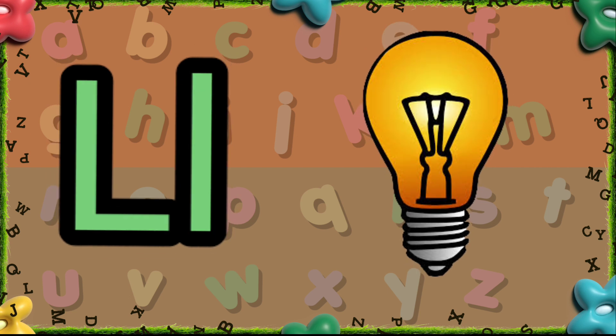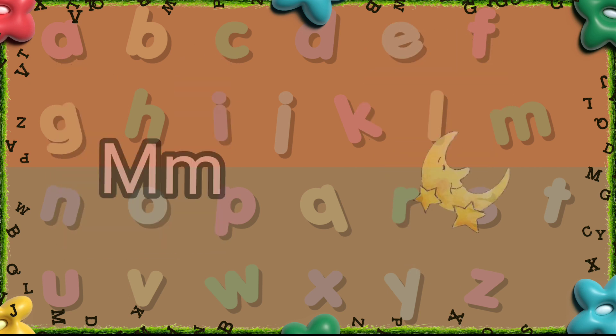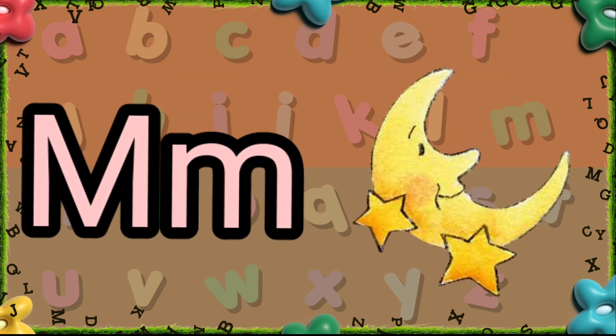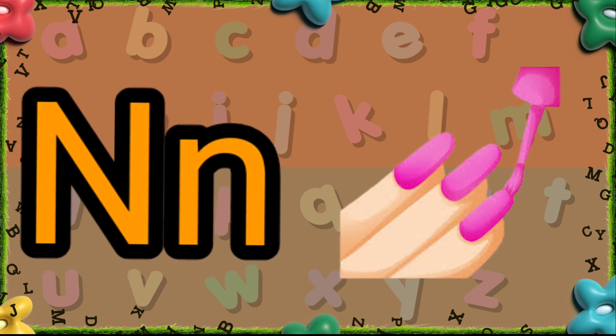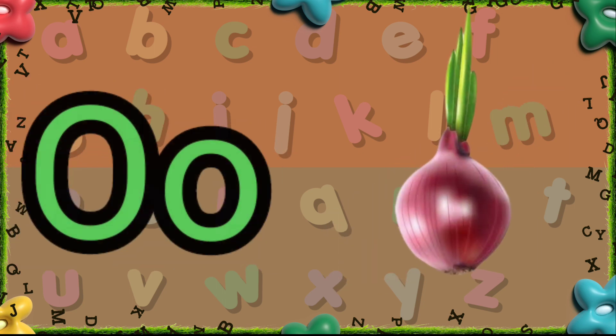L is for Light. M is for Moon. N is for Nail Polish.